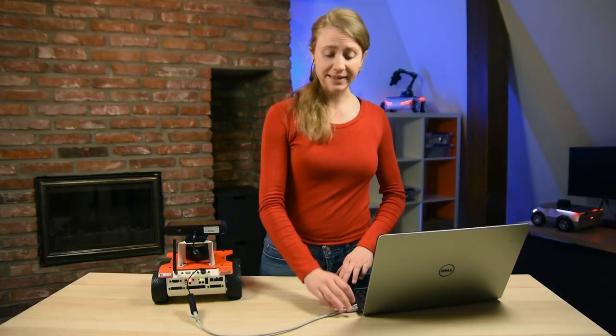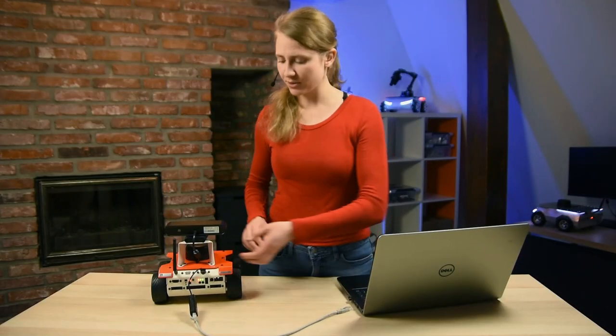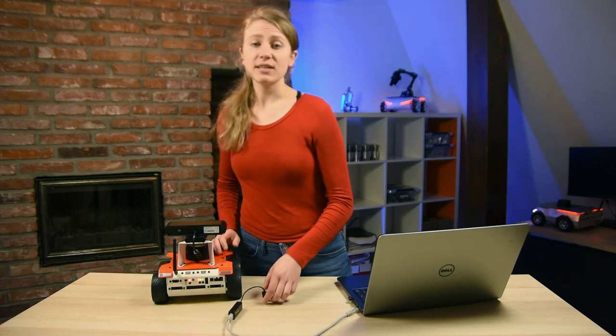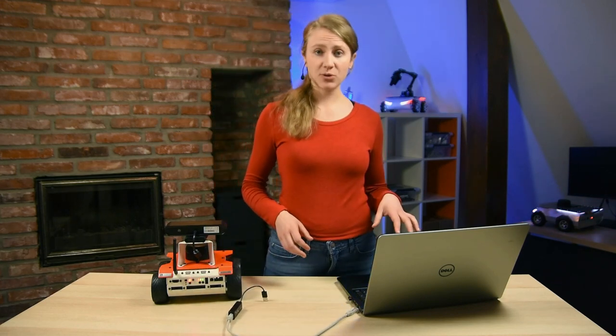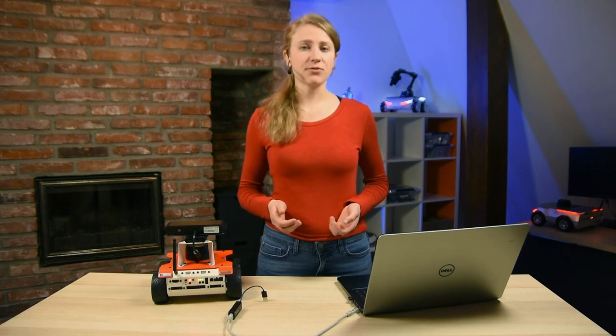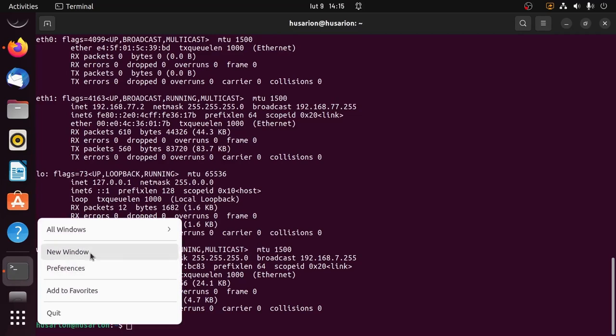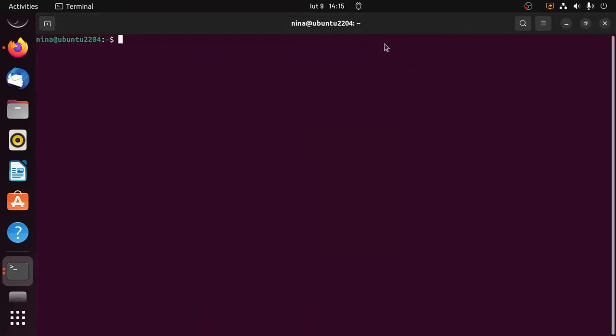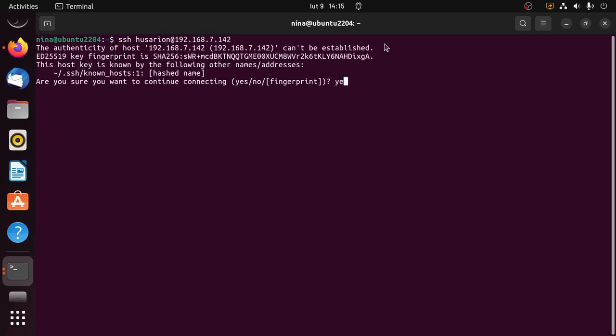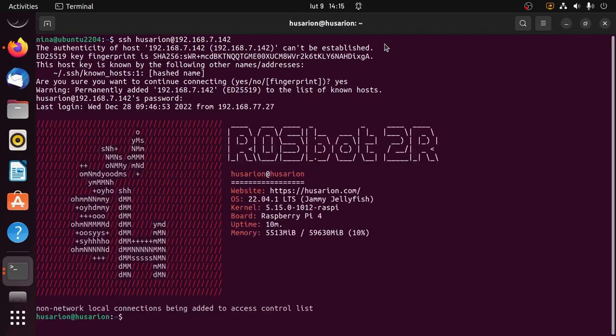Now we can finally unplug the Ethernet adapter and while your Rosbot is connected to the same Wi-Fi network as your computer, you can access it by using its IPv4 address via SSH. So go ahead, open another terminal and type SSH hussarian add and here we put the IP address which we just checked. Here we type yes, the password again is hussarian and done.